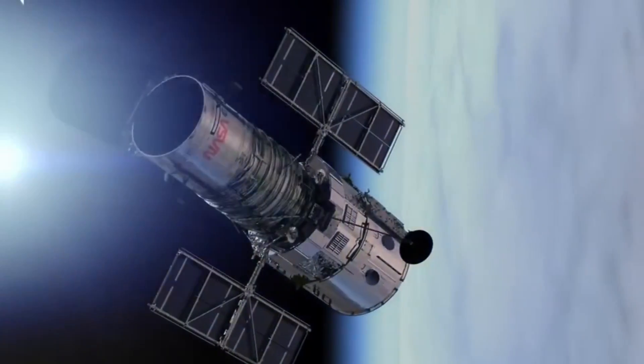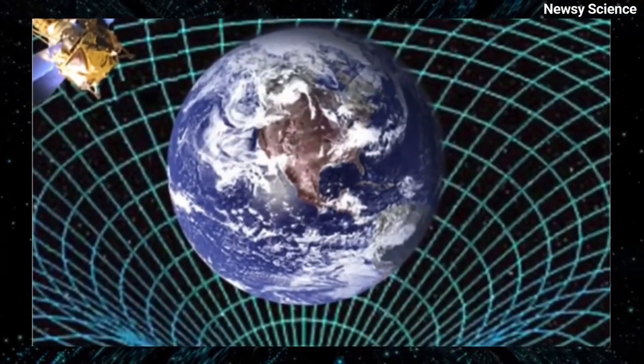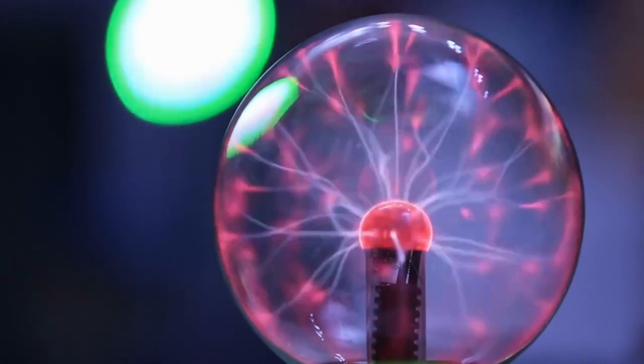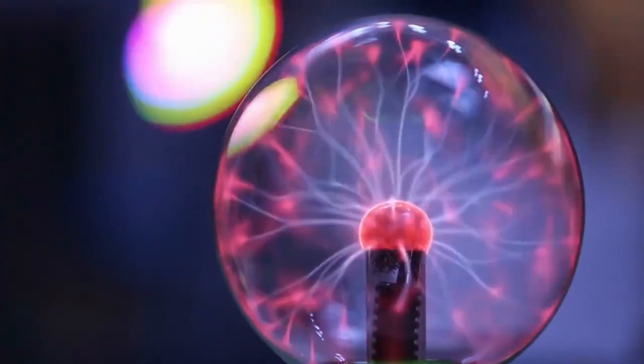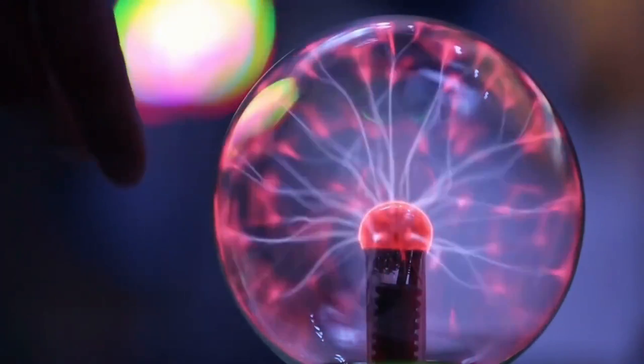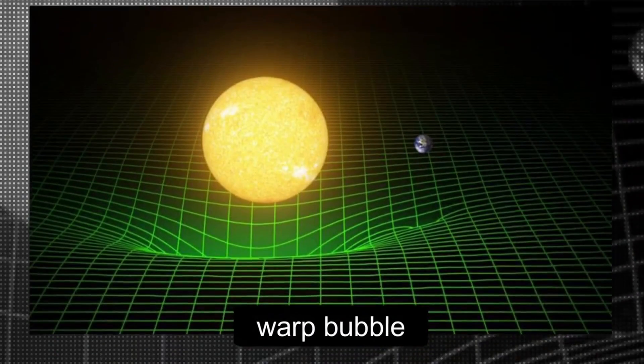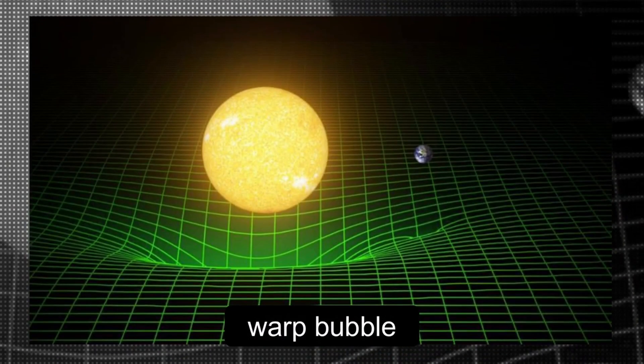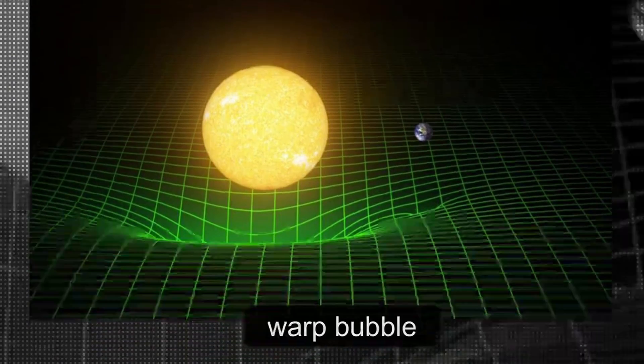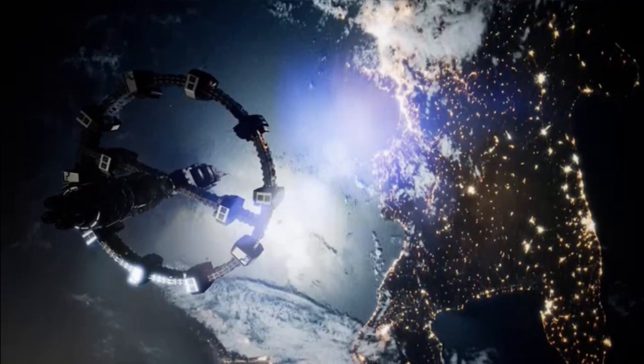To create a warp bubble you must first generate negative energy. Negative energy is a physics concept that involves creating a region of spacetime with a negative energy density. By expanding the spacetime behind the spaceship and contracting the spacetime in front of the spaceship, this negative energy can be used to create a warp bubble. The spaceship would then ride the expanding wave of spacetime, allowing it to travel faster than the speed of light.